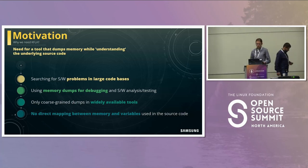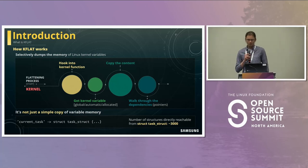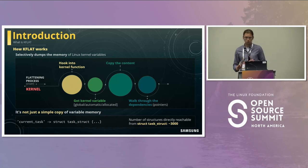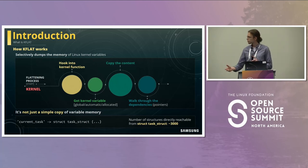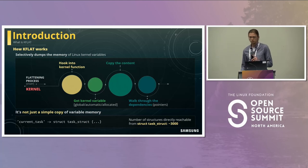KFLAT, short for kernel flattening, is our open source tool for serializing Linux kernel variables or function parameters and restoring them in any application, especially in C user space applications. What KFLAT does: it hooks into some target kernel function, obtains the reference to an interesting variable, copies the content, and follows all the pointers in this dumped area that it could find. It sounds simple — just a few memory copies — but there's a bit more to it.